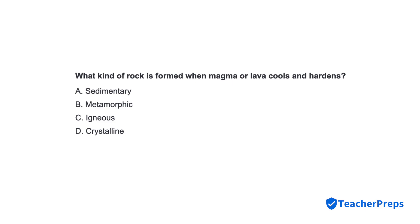What kind of rock is formed when magma or lava cools and hardens? Correct response is letter C, igneous.